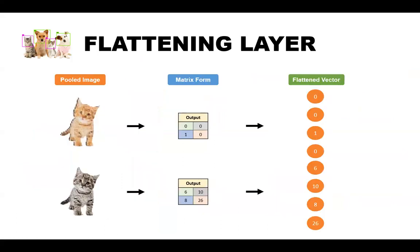The next stage is the flattening layer. Flattening is converting the data into a one-dimensional array for inputting it to the next layer. We flatten the output of the convolutional layers to create a single long feature vector, and it is connected to the final classification model, which is called the fully connected layer.